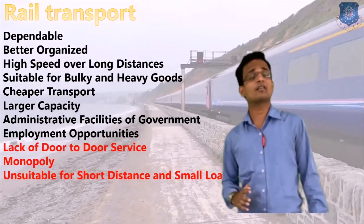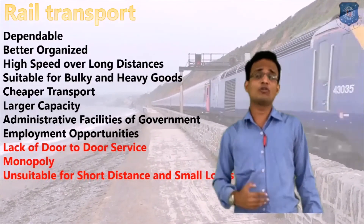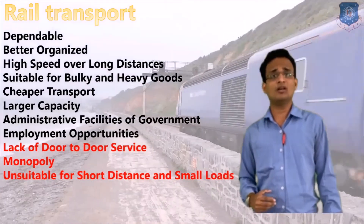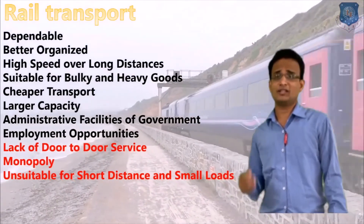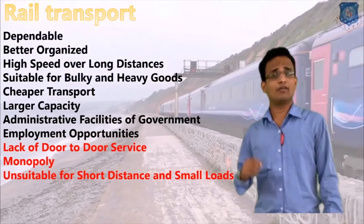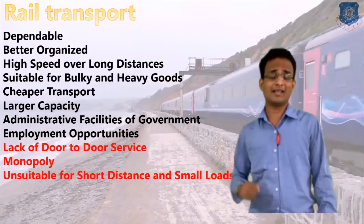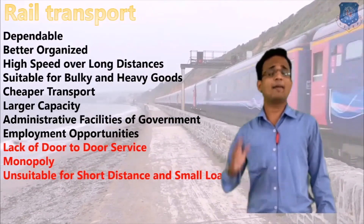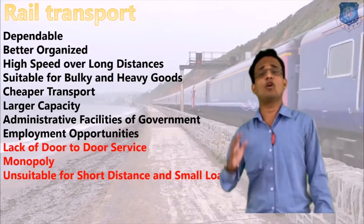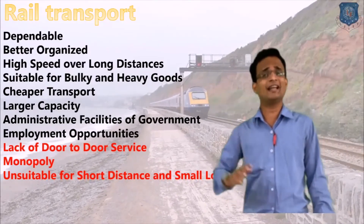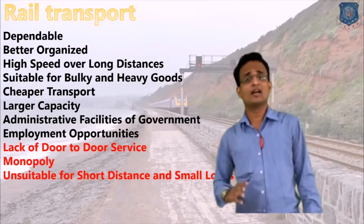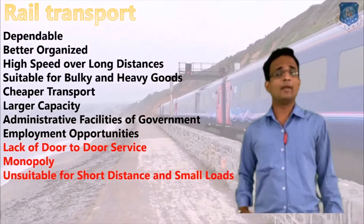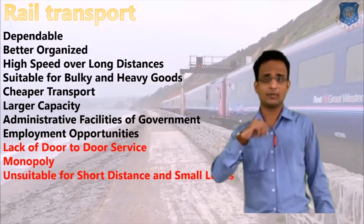Nowadays, in city areas, the government is starting metro rails and mono rails to meet high passenger demand. Indian Railways is also one of the highest employers in the world and directly or indirectly drives our economy. These are the main key features of the rail transportation system.